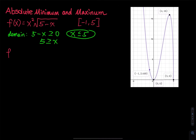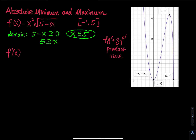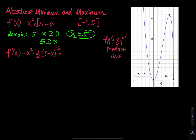For this derivative, we have the product rule: fg prime plus gf prime. So f is x squared, and we take the one-half down, giving 5 minus x to the negative one-half. The derivative of 5 minus x is negative 1 — this is a chain rule, because we have a linear function 5 minus x inside a square root function. The derivative of the inner linear function equals negative 1.